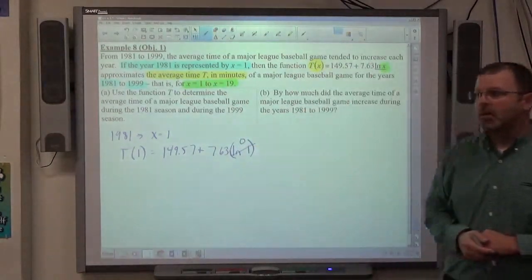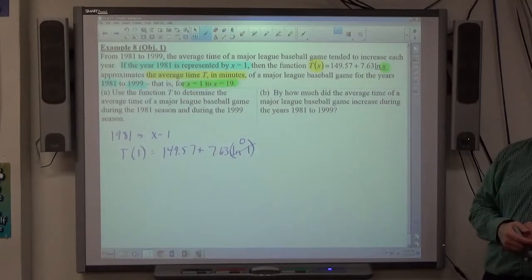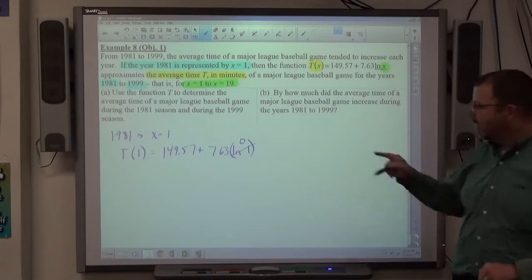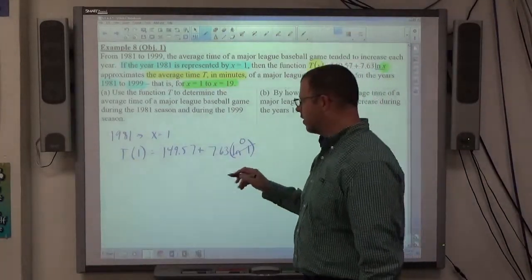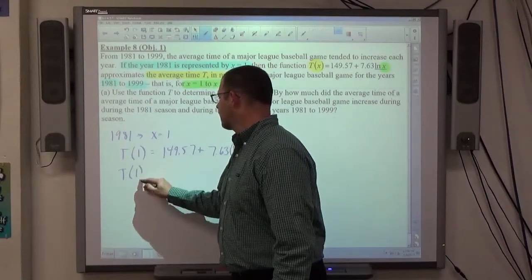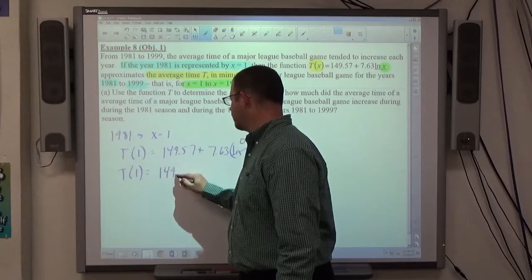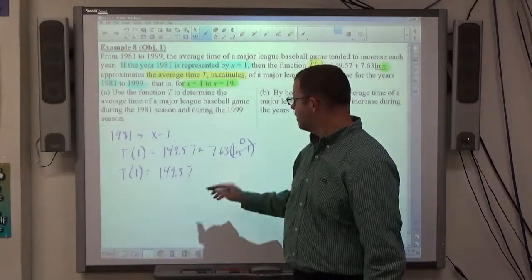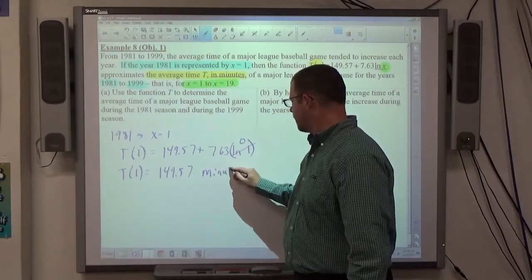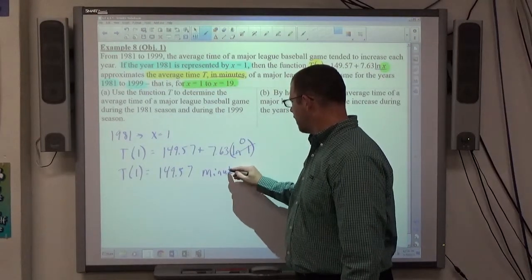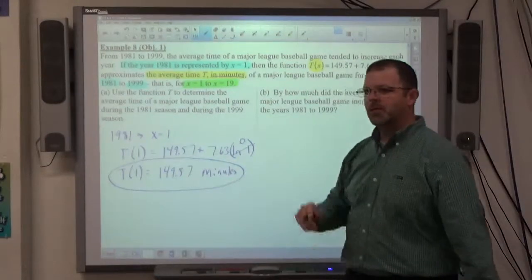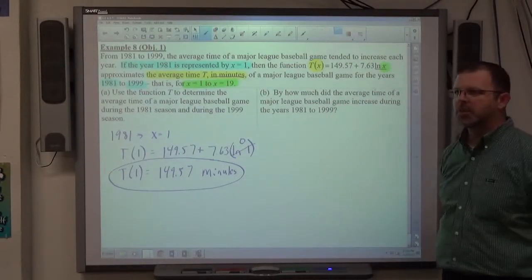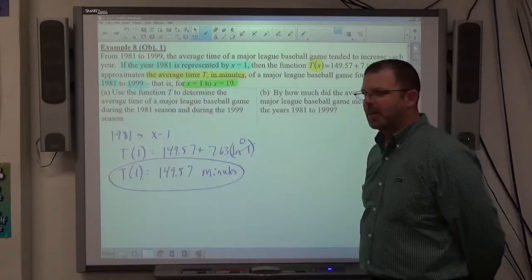The rule says log of 1 base c, doesn't matter what the base is, log of 1 is always equal to 0. 7.63 times 0 is 0, so t of 1 comes out to 149.57. What unit should you put on that? Minutes. Because it says up here minutes. So just under 2.5 hours. Average Major League Baseball game in 1981. If you're assuming that's accurate, that's a pretty quick baseball game.